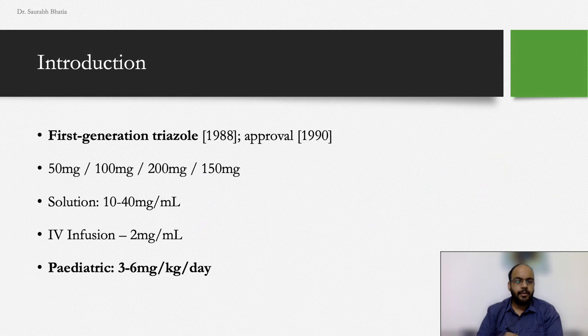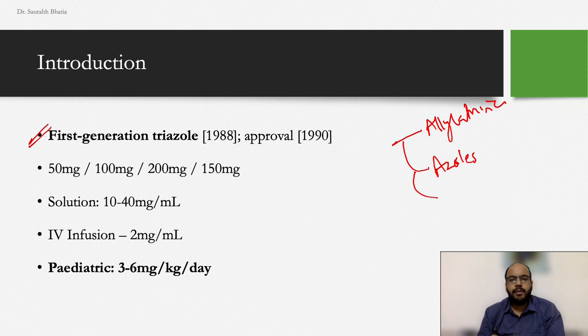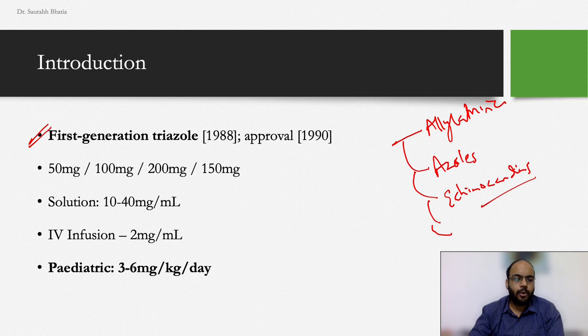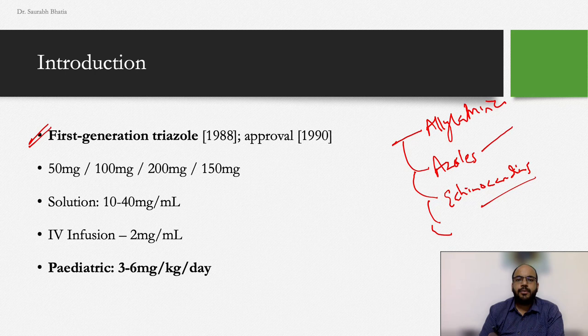Fluconazole is a first-generation triazole. Antifungal classes include allylamines, azoles, and echinocandins, among others. If anyone wants a separate short video on classification of antifungal drugs, mention it in the comments. Azoles are divided into two subclasses: imidazoles and triazoles, depending on the number of nitrogen atoms in the ring structure.